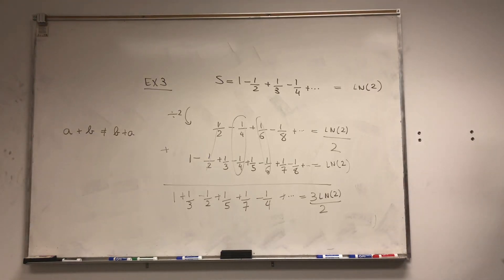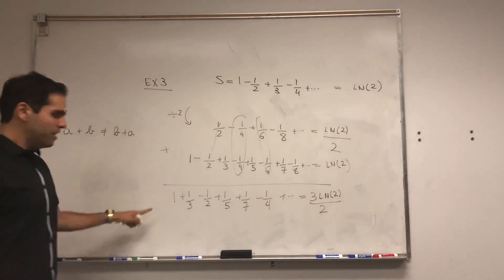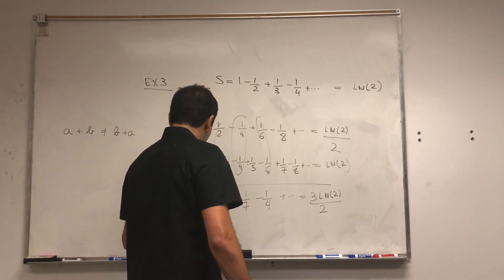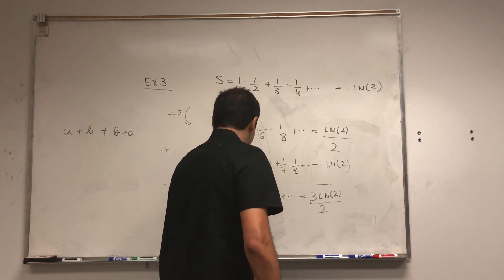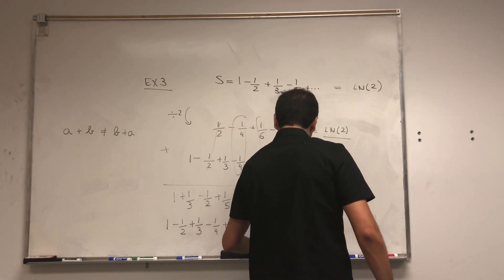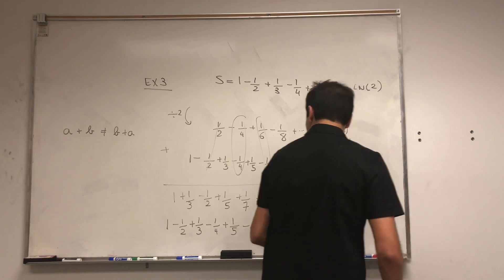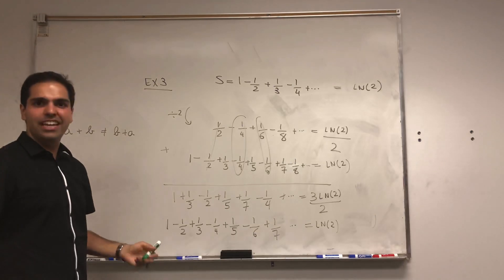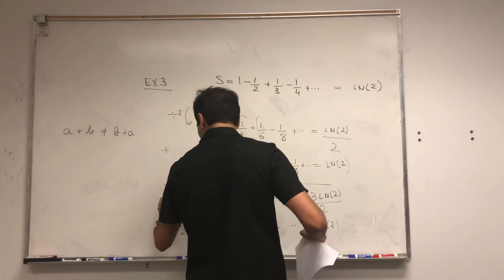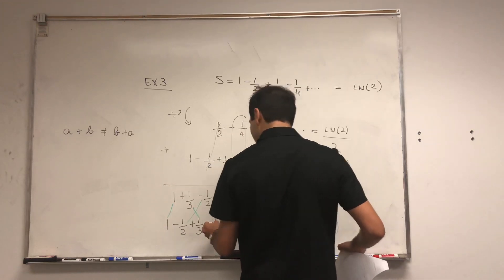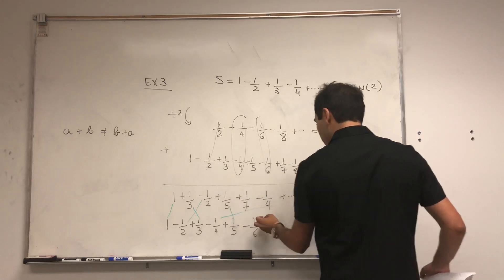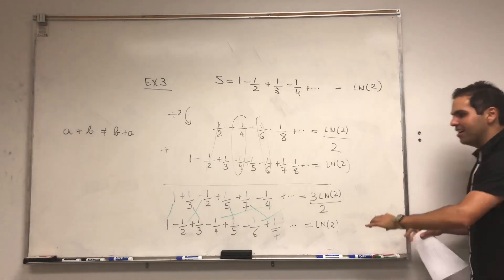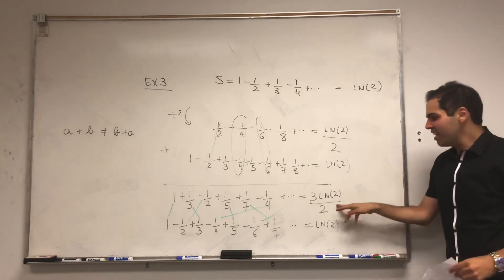1 half ln of 2 plus ln of 2 is 3 halves ln of 2. But now, take this and compare them to the original series. 1 minus 1 half plus 1 third minus 1 quarter plus 1 fifth minus 1 sixth plus 1 seventh, et cetera. That's ln of 2. And in particular, if you compare this, notice that this series is just the same as the beginning, except with the terms jumbled around. Because look, 1 is here, 1 third is here, minus 1 half is here, 1 quarter is here, 1 fifth is here, 1 sixth is somewhere around there, 1 seventh, et cetera. So, legitimately, you've shown that you can rearrange the terms of this series and get a completely different limit.